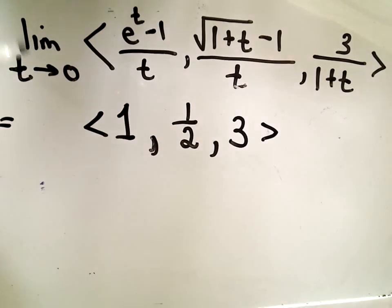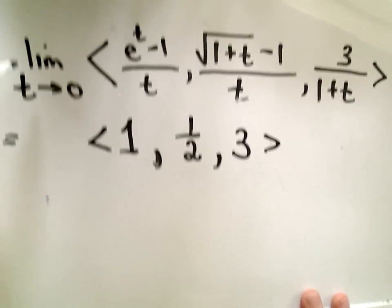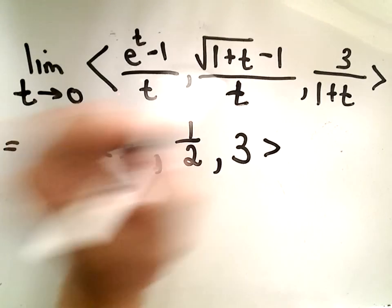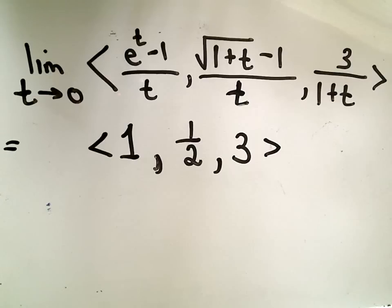So now we've computed the limit of this original vector equation by doing each part individually. So that's basically the tedious part with finding the limit of a vector function, is that you're just going to have to do basically three different limit problems. But the ideas are the same. So as long as you're okay with limits, it's just tedious at worst.